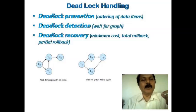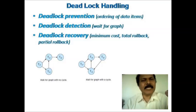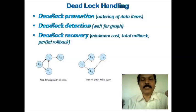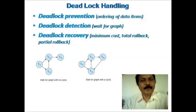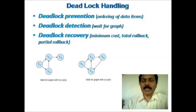Improper sharing of resources or data items among various transactions leads to deadlock. In a deadlock state, the system gets hung up. There are measures called deadlock prevention, done by ordering the data items; deadlock detection, done with the help of a wait-for graph; and deadlock recovery, where minimum cost is estimated and that transaction is removed or killed.